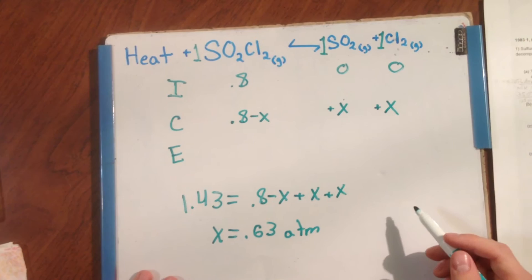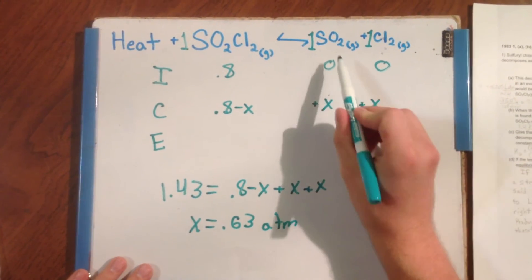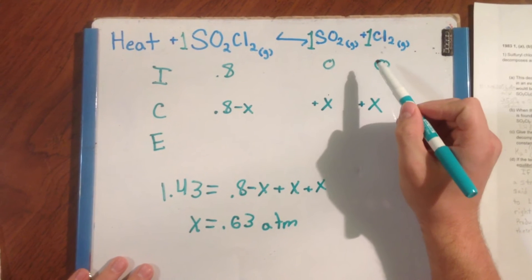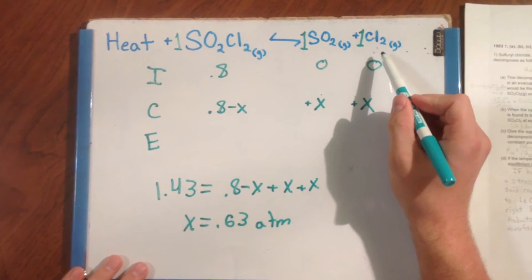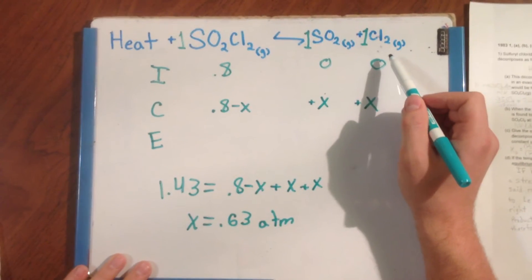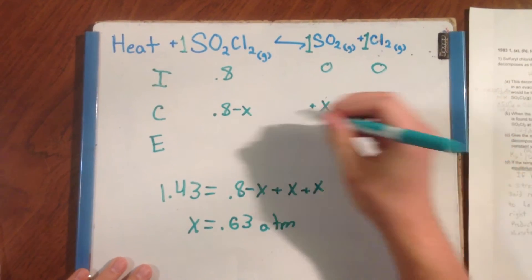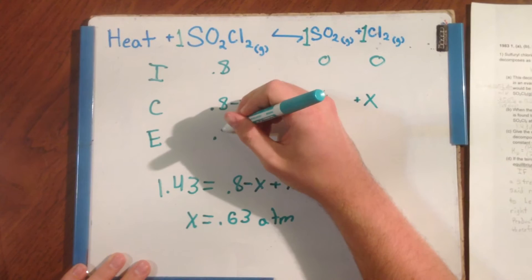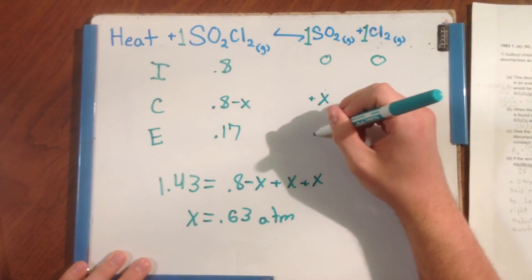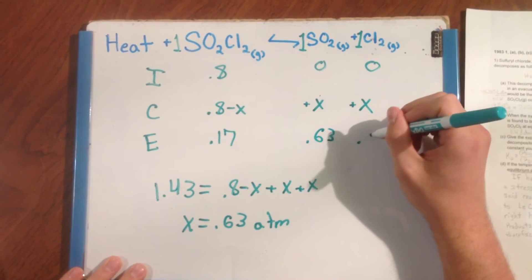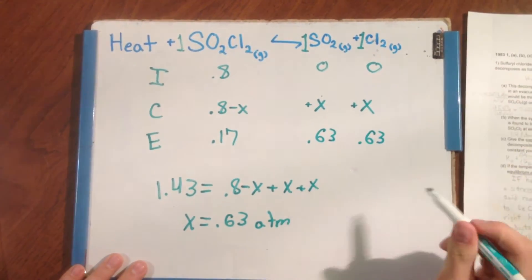This is the pressure associated with 1 mole of SO2 gas, which is equal also to 1 mole of Cl2 gas at equilibrium. By plugging this back into the chart, we have all the partial pressures. 0.17, 0.63, and 0.63 atmospheres.